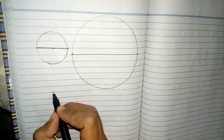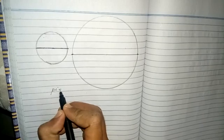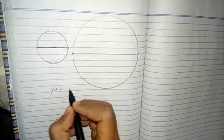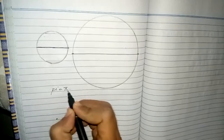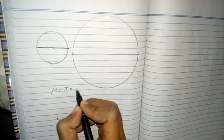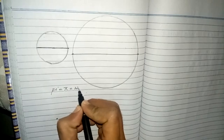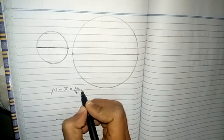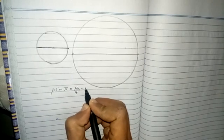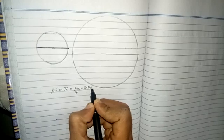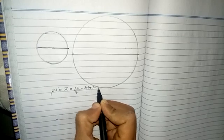Hello friends, in this video we will discuss about pi, specially represented as this symbol. Its value is 22 upon 7, or approximately 3.1415 and so on.